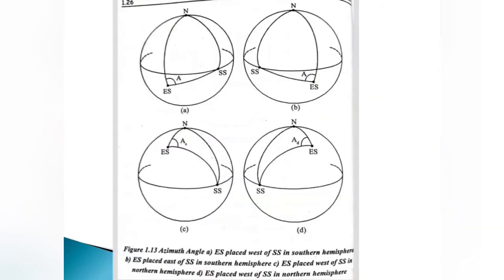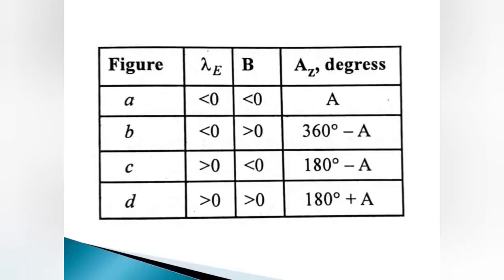To determine the azimuth angle, four scenarios are considered: (a) earth station placed west of subsatellite point in the southern hemisphere; (b) earth station placed east of subsatellite point in the southern hemisphere; (c) earth station placed west of subsatellite point in the northern hemisphere; and (d) earth station placed west of subsatellite point in the northern hemisphere.